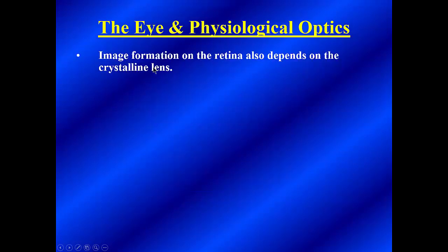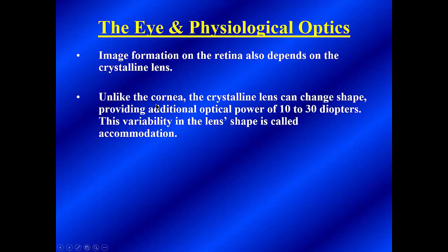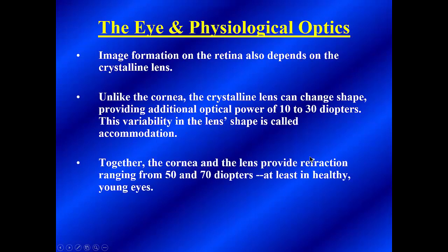Image formation on the retina also depends on the crystalline lens, not just on the cornea. We have these two components that do the refraction or bending for us, and that helps to focus the light onto the retina. Unlike the cornea, an interesting property of the crystalline lens is that it can change shape, providing an additional optical power of between 10 to 30 diopters, depending on how much it is bent and its shape at the moment. This variability in the lens shape is called accommodation. Together, the cornea and the lens provide refraction that ranges from about 50 to 70 diopters, at least in healthy young eyes. As we get older that number might change, but this is a good estimate for young adults.